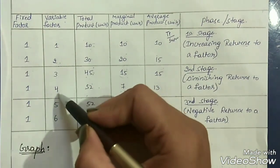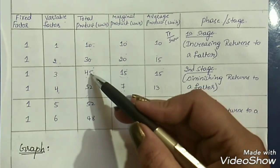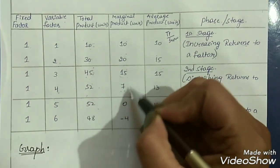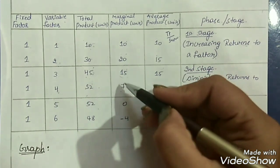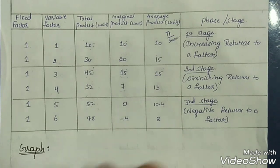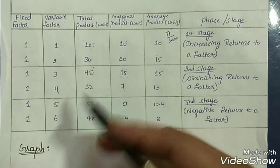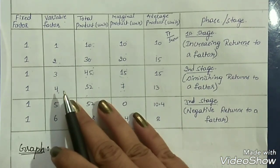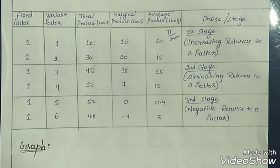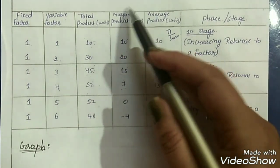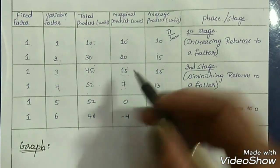When we increase labor from 3 to 4, output increases from 45 to 52 bags. But the difference is only 7 bags, so our output has increased but at a diminishing rate — our marginal product is reducing. Average product is 52 divided by 4, which is 13. This is the end of stage 2, where output increases but at a diminishing rate because marginal product is reducing.